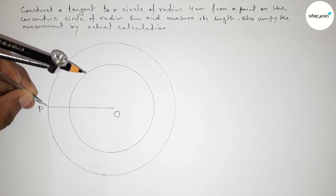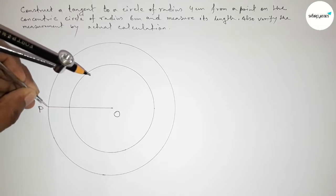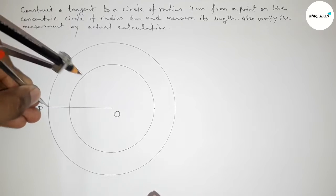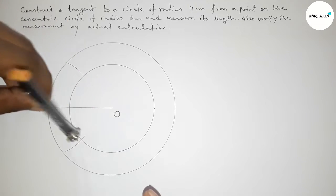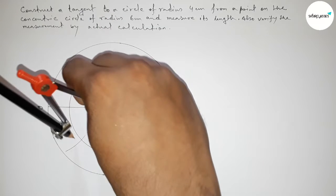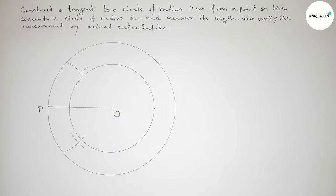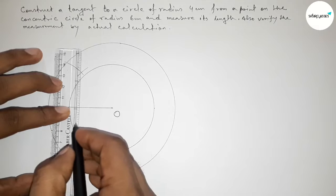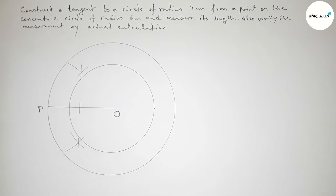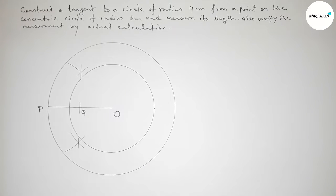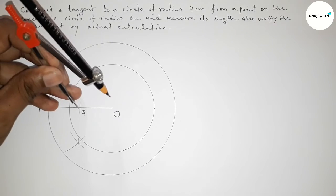Placing the compass on point P, taking a length greater than half of PO, and drawing arcs. Then placing the compass on point O and cutting arcs on both sides. Joining the intersection points gives a line that bisects OP, and we mark that midpoint as Q.